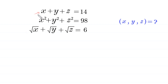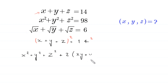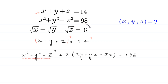The equation is x plus y plus z is equal to 14. Taking the square of both sides: (x+y+z)² equals x²+y²+z² plus 2(xy+yz+zx), which equals 14² = 196. Now we replace x²+y²+z² with the given value 98, so this becomes 98 plus 2(xy+yz+zx) = 196.